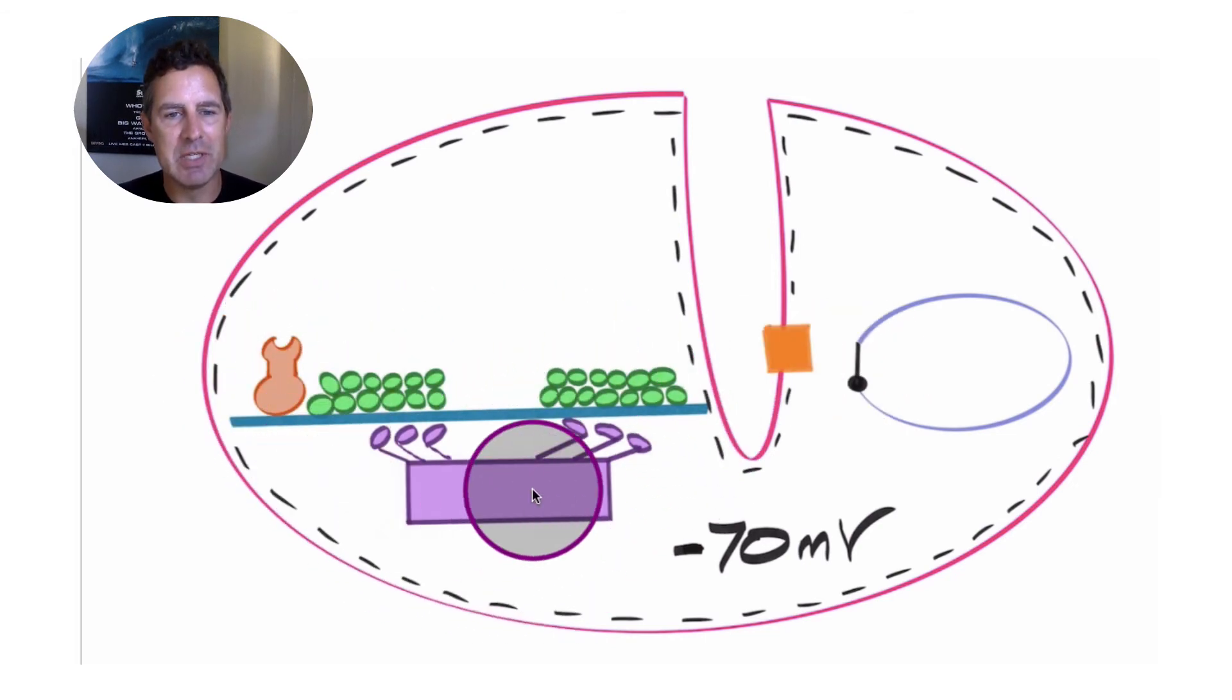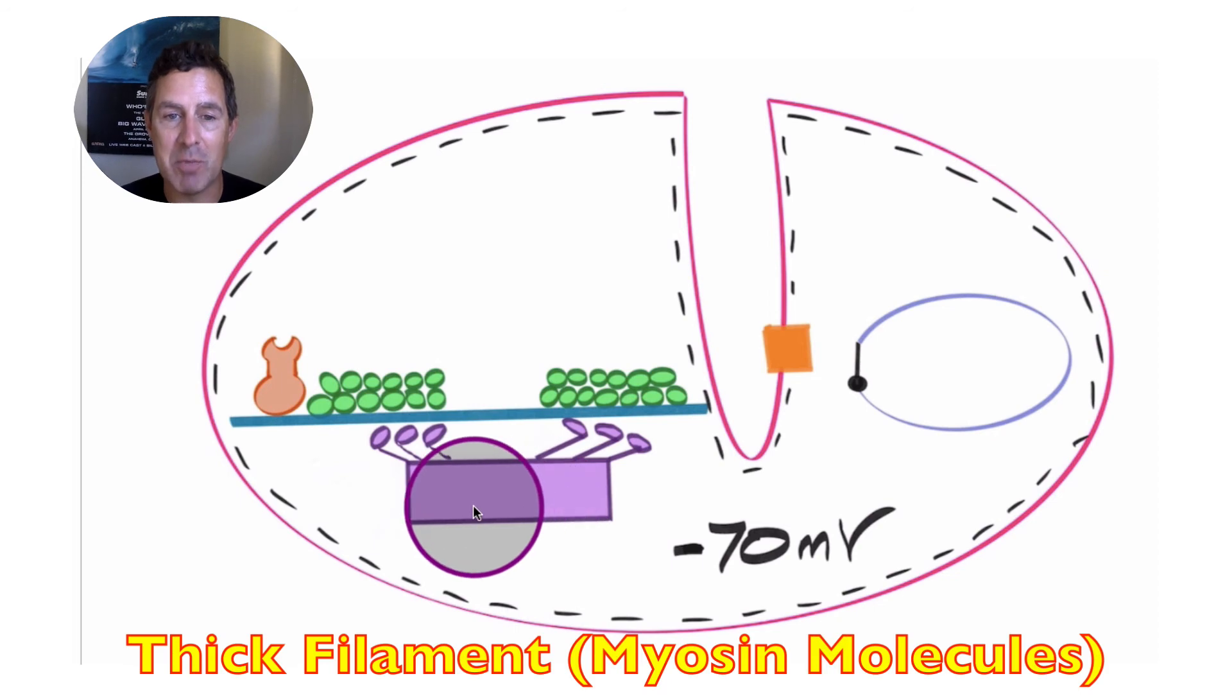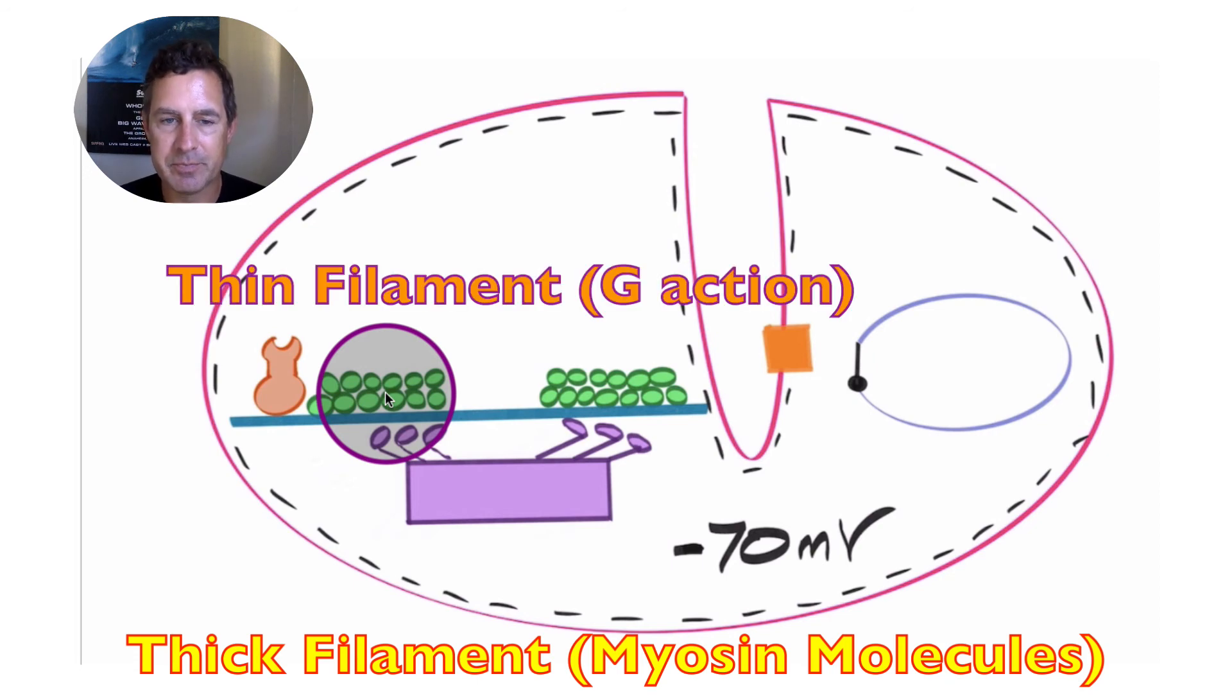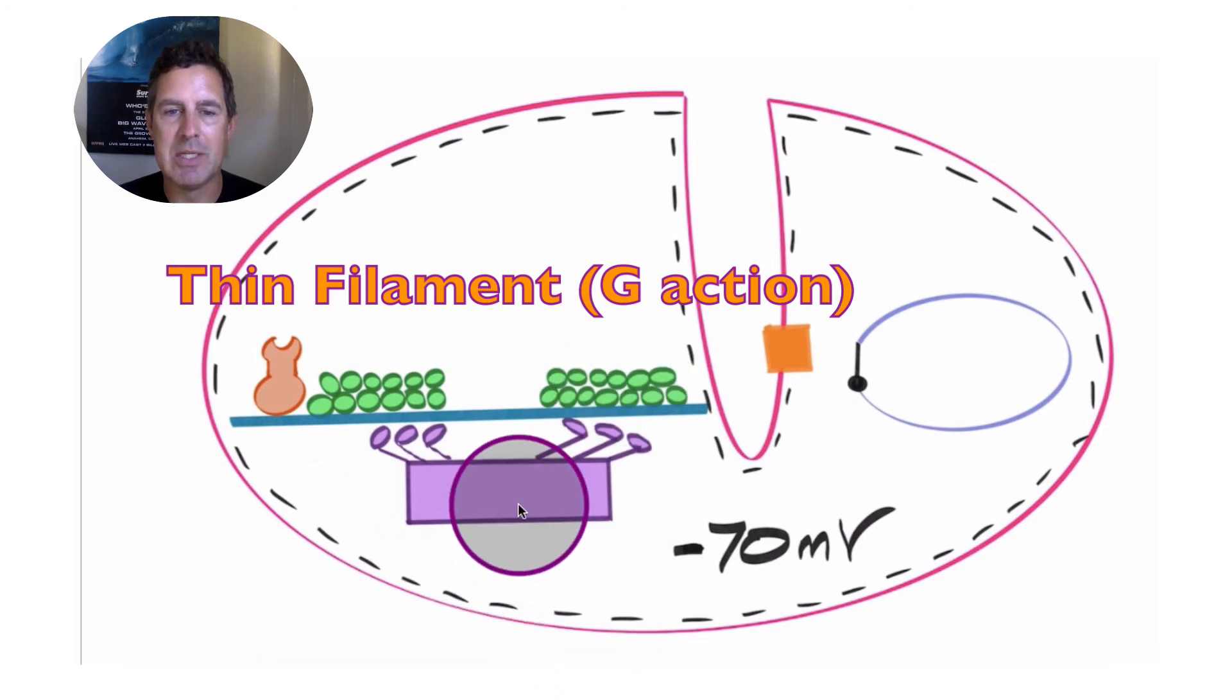Over here to the left, we have the contractile proteins. These are the proteins that are actually going to allow the muscle fiber to shorten or to contract. To be clear, muscle fibers do not always shorten when they contract, but many of them do. In purple here we see the myosin molecule. In green, we see a double-stranded thin filament made up of G-actin molecules. So the thin filament in green is actin. The thick filament in purple is myosin.